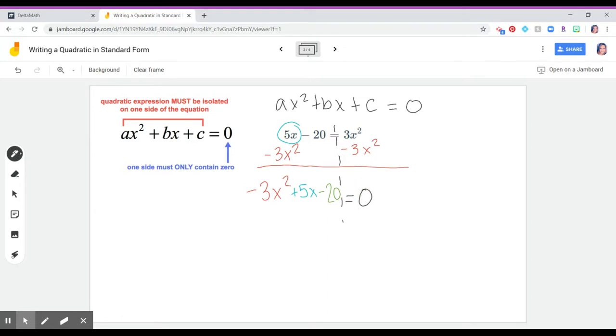So the a value, a is negative 3. Delta math won't ask you to identify these, but it's going to be helpful for us the next thing we do. So our b value is positive 5, and then our c value is negative 20.